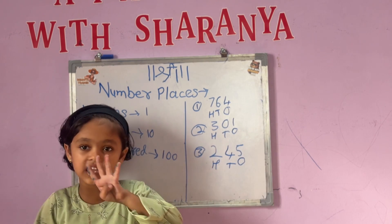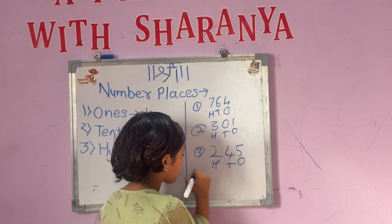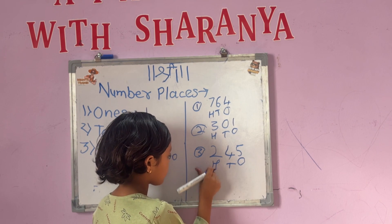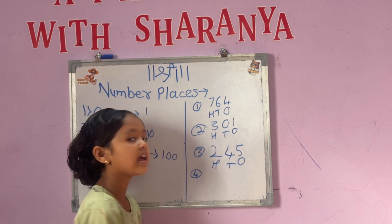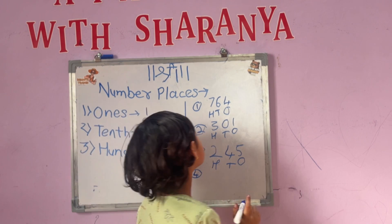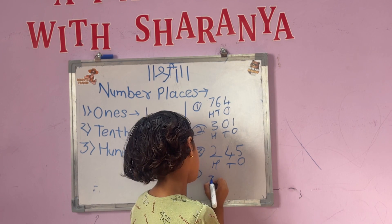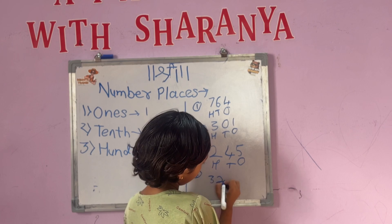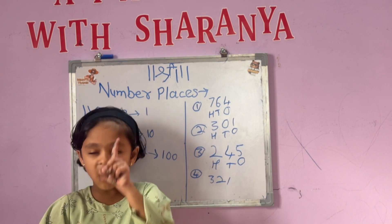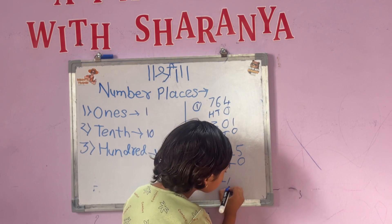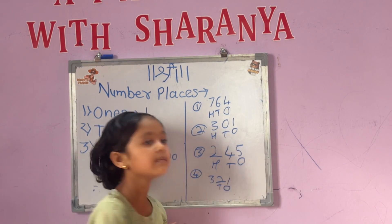Now take the 4th example. The 4th example is 3, 2, and 1. In that, the 1st place is 1, the 10th place is 2, and the 100th place is 3.